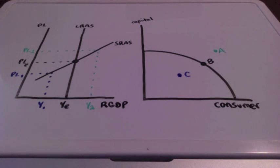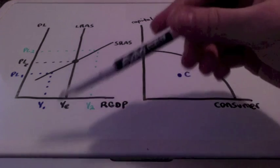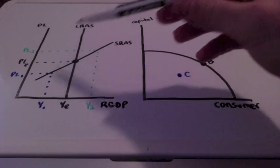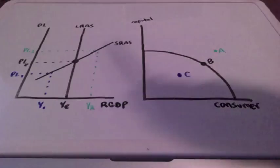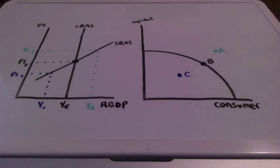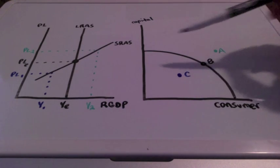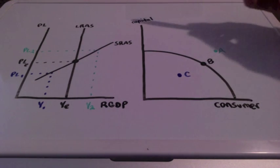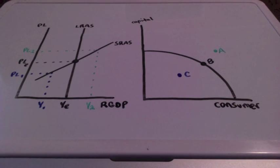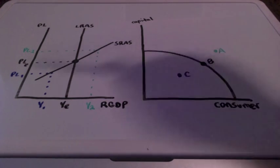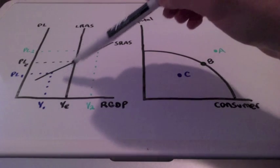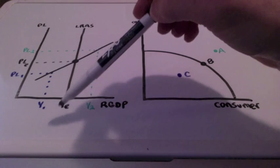In this video lesson we're going to take a look at the aggregate supply and the production possibility curves. On the left we have our long run aggregate supply and our short run aggregate supply curve, with price level and GDP as axes. To the right we have our production possibility curve, with capital and consumer goods.